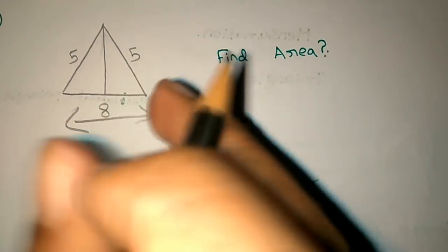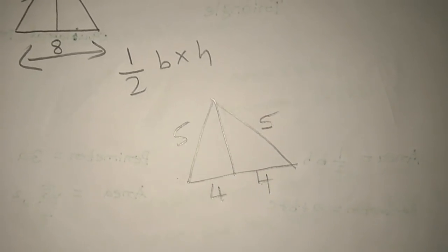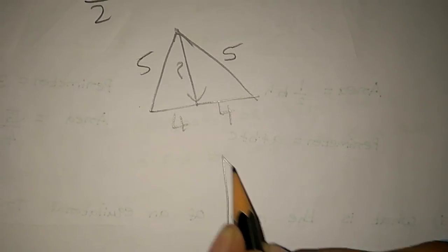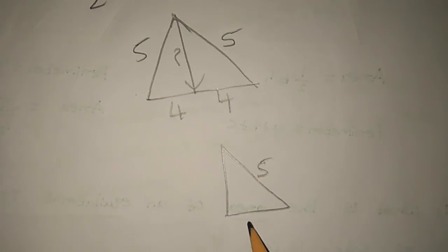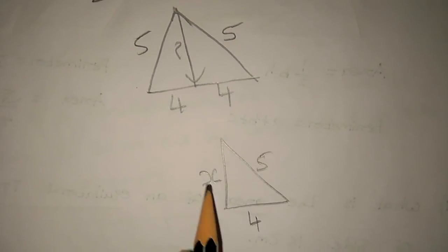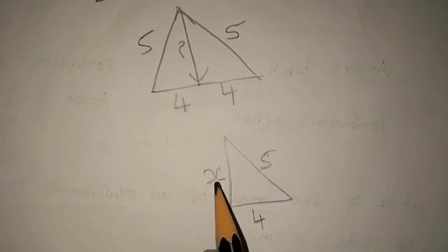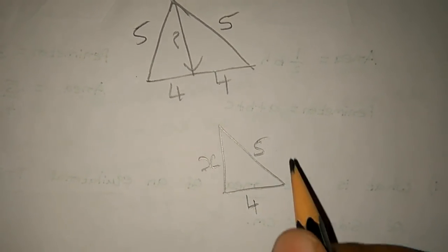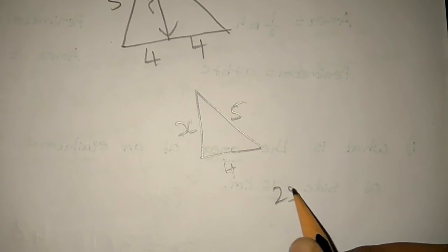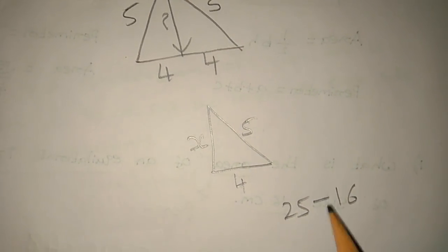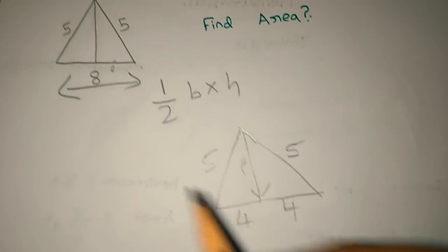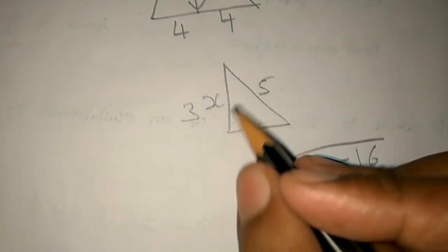Now let's find an unknown side. This side is 5, this side is 5, and this is 8. Using the Pythagorean theorem, we subtract two squares. The hypotenuse squared minus the known side squared: 25 minus 16 equals 9. Taking the square root, √9 = 3. So the height is 3.